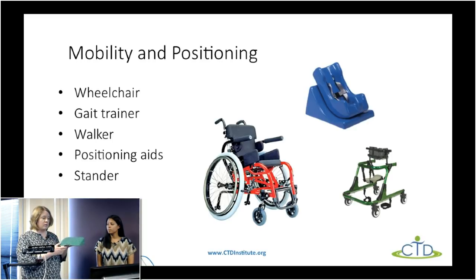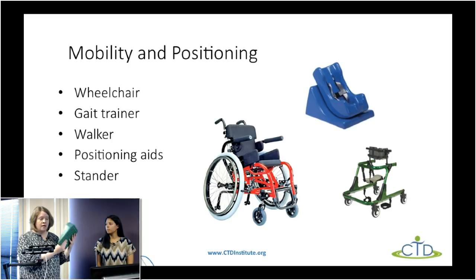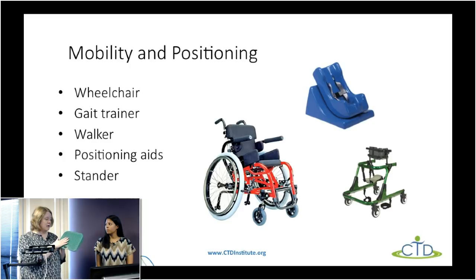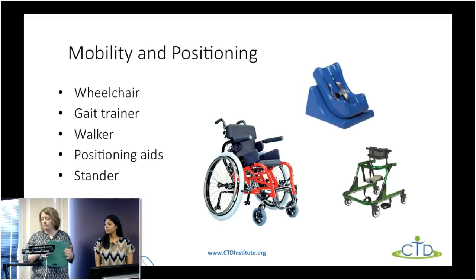There are also some other positioning supports. This is a balance wedge — something I could put on my chair and sit on if I needed some support while sitting. It has a bumpy side and a smooth side. If I wanted some sensory input to help pay attention I could sit on the bumpy side, and I could also wiggle back and forth like a stability ball or yoga ball.